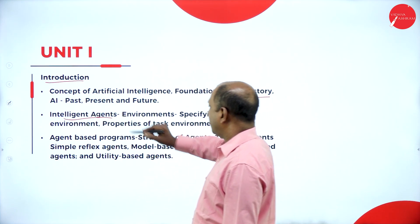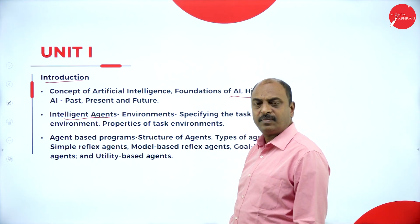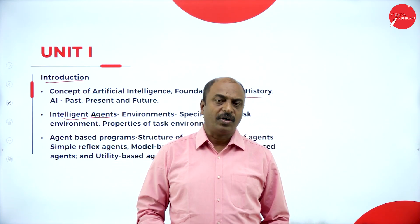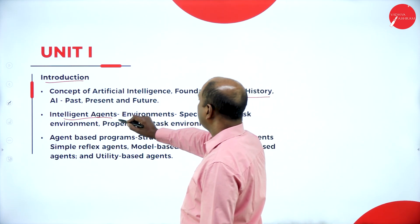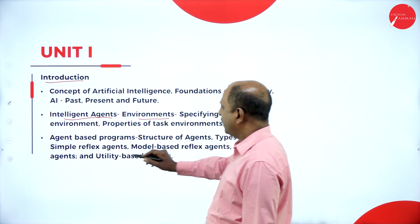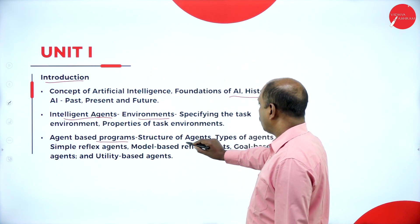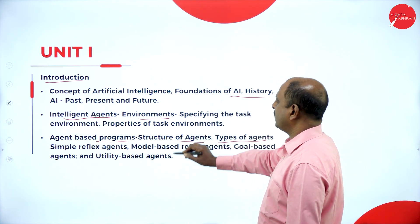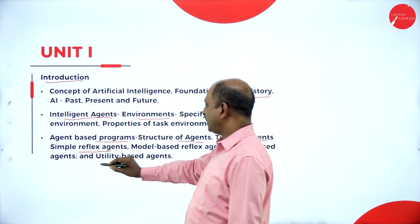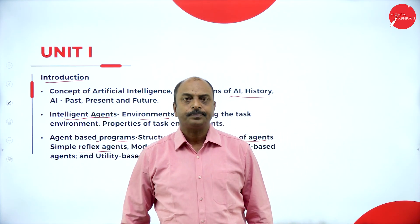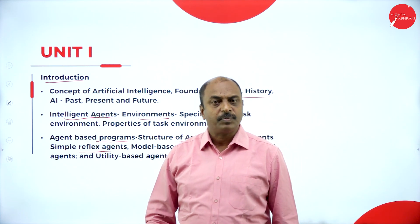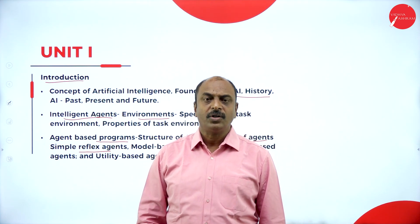We are also going to learn about intelligent agents. Agents are nothing but a type of sensors — they sense the environment and act accordingly. We will learn about intelligent agents based on different environments, agent-based programs, and the structure of agents. Different types of agents include simple reflex agents, model-based reflex agents, goal-based agents, and utility-based agents.